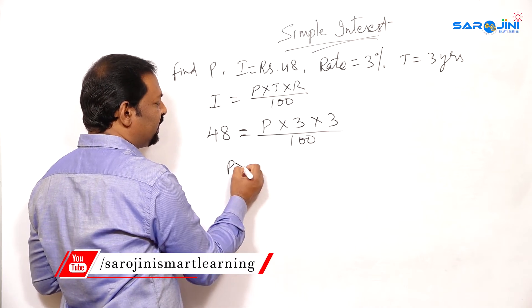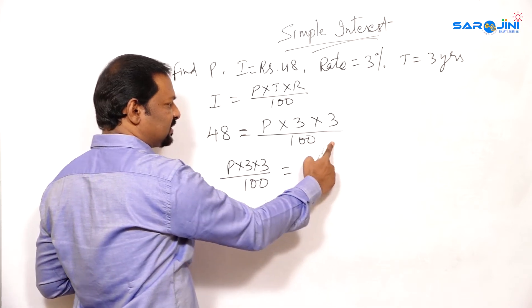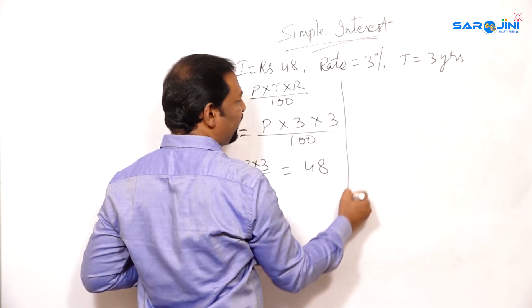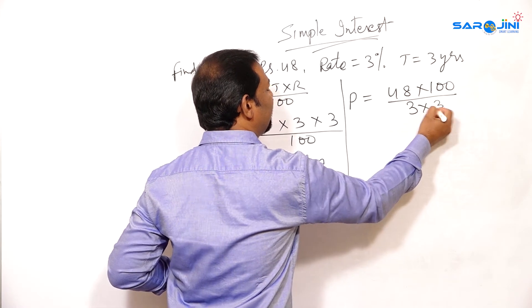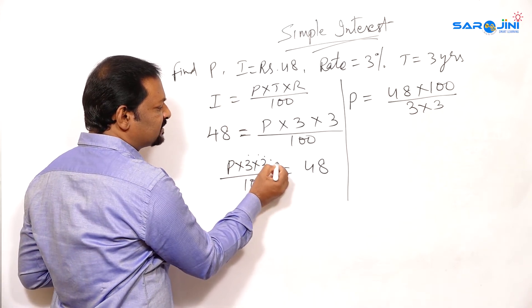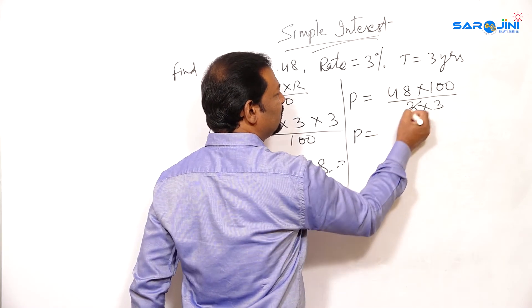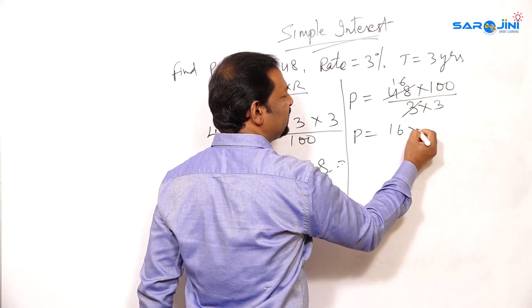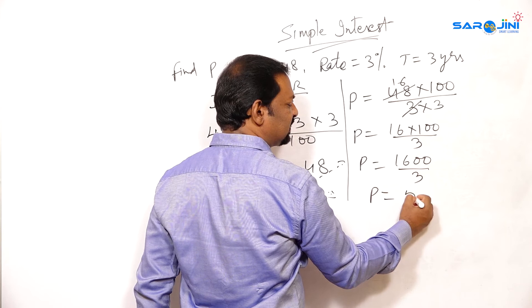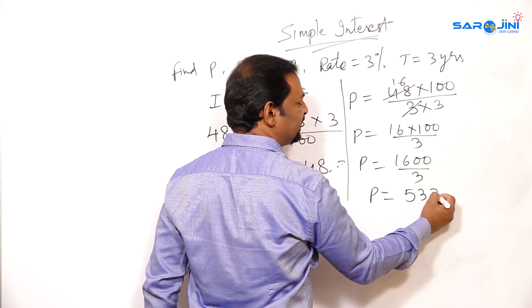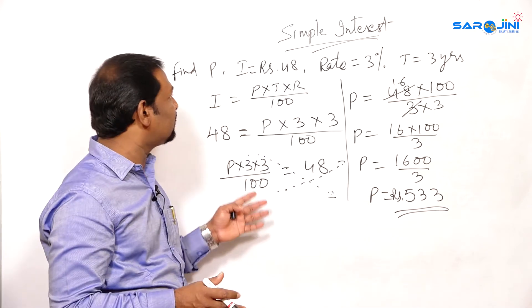So what I will do? P into 3 into 3 divided by 100 is equal to 48. I will interchange — LHS sending to RHS and RHS to LHS. Now we have to find only P. P is equal to 48 into 100 by 3 into 3. Because the numerator always comes to the denominator side and the denominator goes to the numerator side in a simple equation. So P is equal to 3 ones of 3 — so this is 16 into 100 by 3, which is 1600 by 3. On cancellation, P is approximately 533 rupees as the principal amount.